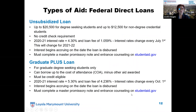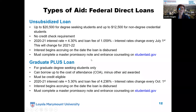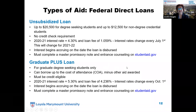Other types of aid are federal direct loans. The unsubsidized loan allows you to borrow up to $20,500 if you're a degree-seeking student, or up to $12,500 if you're a non-degree credential student. The unsubsidized loan does not require any credit check. The interest rate for the current academic year is 4.3% and the loan fee is 1.059%. Interest rates change every July 1st. Interest begins accruing on the date the loan is disbursed. If you are awarded and accept an unsubsidized loan, you must complete a master promissory note and entrance counseling on studentaid.gov.